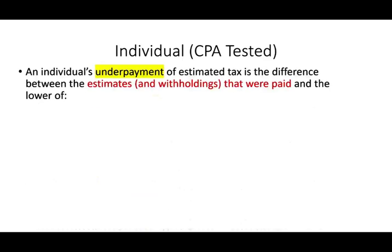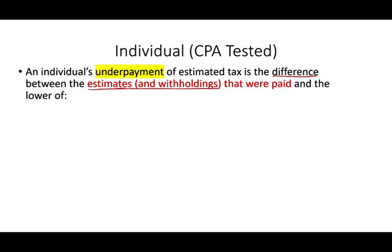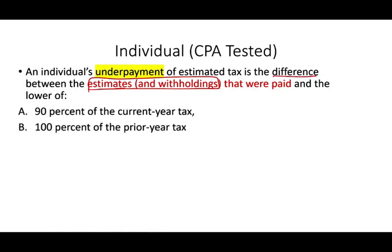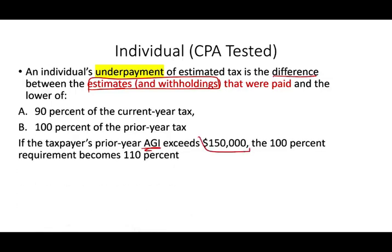How do we determine the individual underpayment of estimated tax? It's the difference between the estimates or withholding that were paid and the lower of two figures: 90% of the current year tax or 100% of the prior year tax. If your AGI is more than $150,000, you change the 100% to 110%. Choose the lower of these two and compare them to what you paid. If what you paid in estimates and withholding is more, you're in good shape.